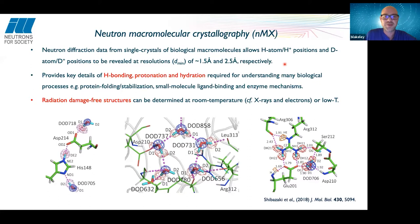Most importantly, deuterium or hydrogen positions allow us to visualize hydrogen bonding within proteins or biological macromolecules. We have also done studies of oligonucleotides and different forms of DNA. The neutron data shows us hydrogen bonding networks, gives information on the protonation states of amino acids, and gives information on the water structure — where we can see not only the positions of water molecules, but also their orientations.